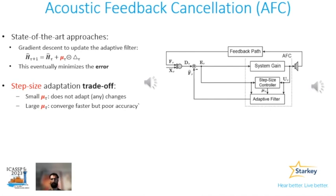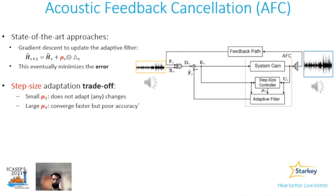To have a better understanding, let's consider this audio example. I'll play the input first and then the output with a conventional adaptive filter. [Input audio plays] That was the input — now the output. [Output audio with conventional adaptive filter plays]